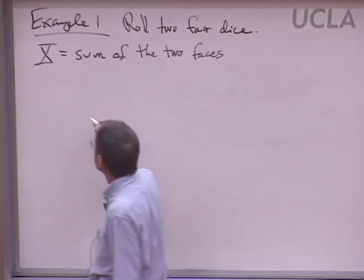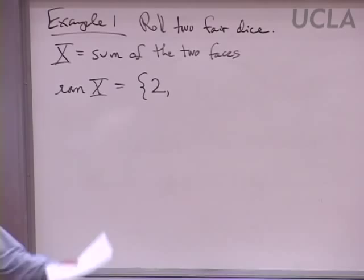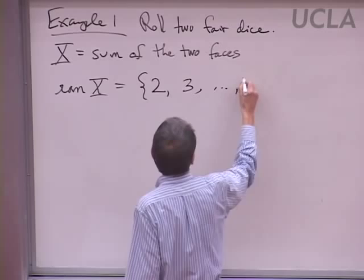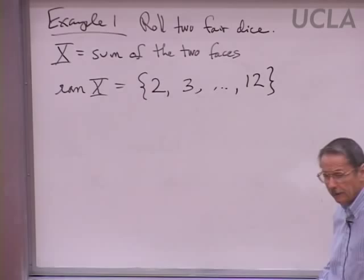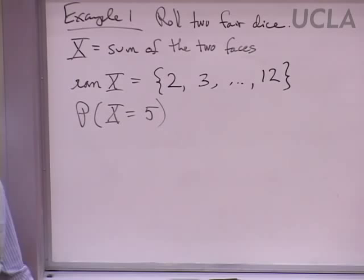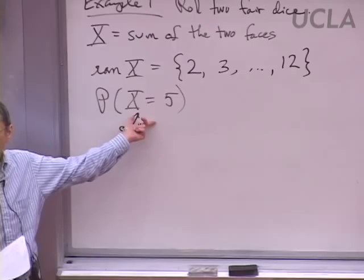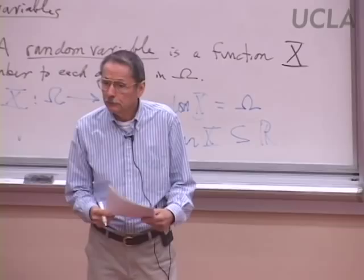What could that be? What's the range of X? Well, the smallest the sum could be is two, and the largest it can be is 12. We could ask: what's the probability that the sum is five? That's the sort of problem we already know how to do — it's just being restated in new terminology. We're interested in a certain event, and we want its probability. The event consists of all the outcomes for which this random variable takes on the value five.